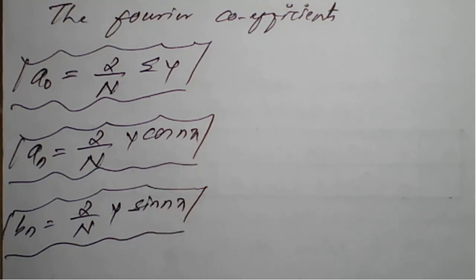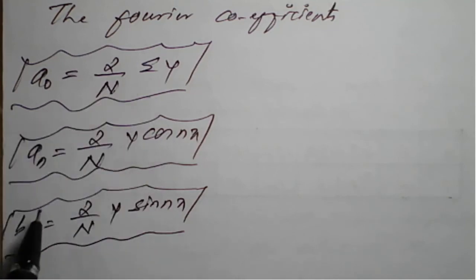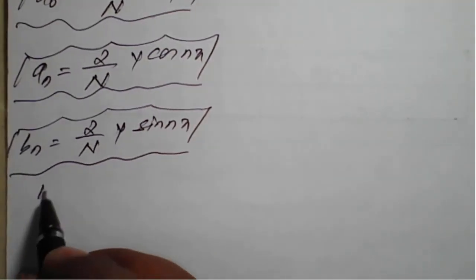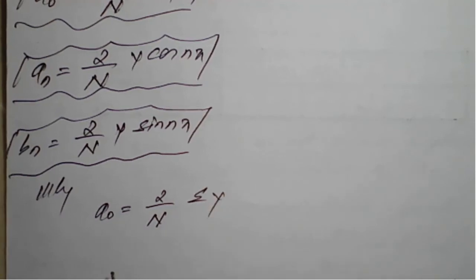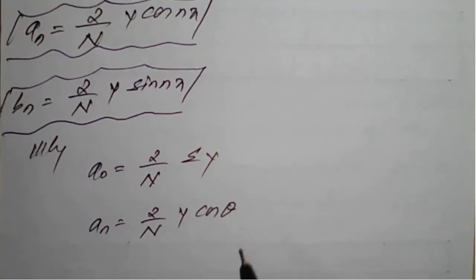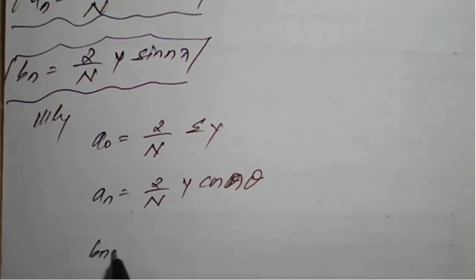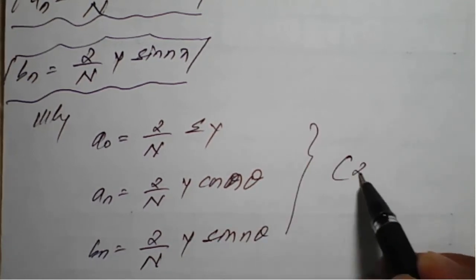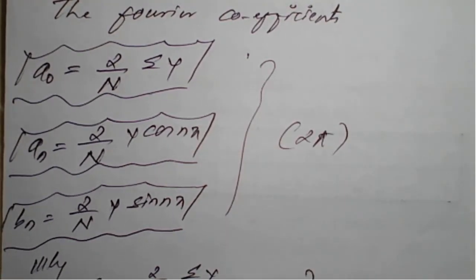Similarly, for period 2l: a₀ = (2/N) Σy, aₙ = (2/N) Σy cos(nθ), bₙ = (2/N) Σy sin(nθ). The above formulas apply for period 2π, and can also be applied when the given variable values are in degrees. We apply the period 2l formulas when the data is given as individual numbers in sequence.